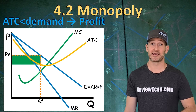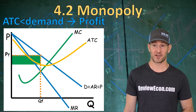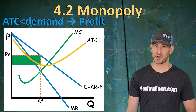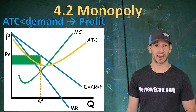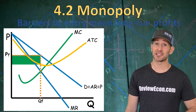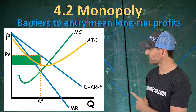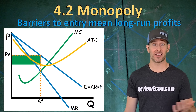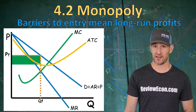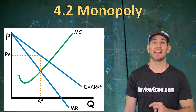You can calculate the area of it if there are numbers. Since barriers to entry for a monopoly are incredibly high, this firm can actually earn economic profits in the long run — they're stuck here and nobody can compete away their profits.